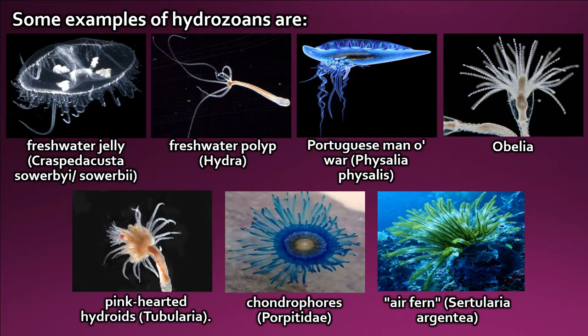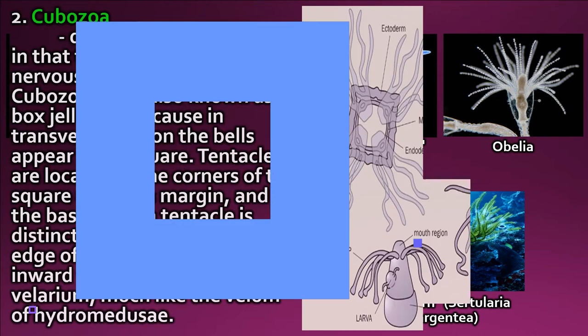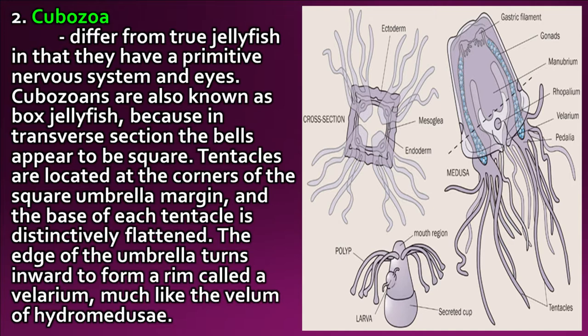Cubozoa differ from true jellyfish in that they have a primitive nervous system and eyes. Cubozoans are also known as box jellyfish because in transverse section the bells appear to be square. Tentacles are located at the corners of the square umbrella margin, and the base of each tentacle is distinctively flattened. The edge of the umbrella turns inward to form a rim called a velarium, much like the velum of hydromedusae.